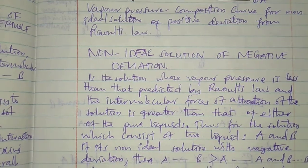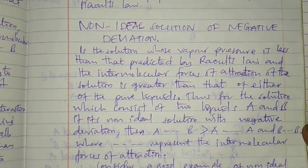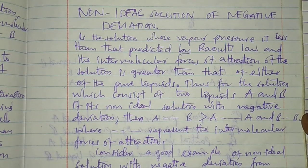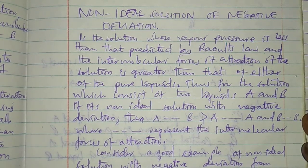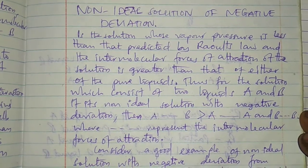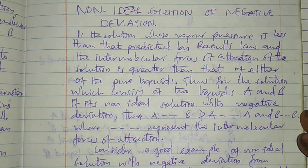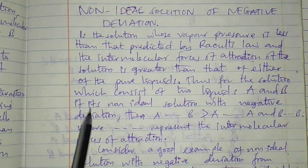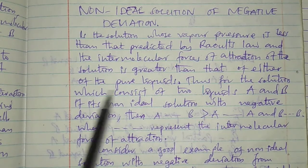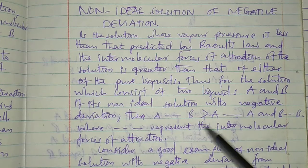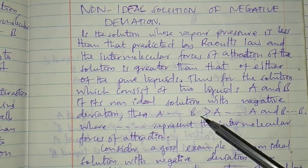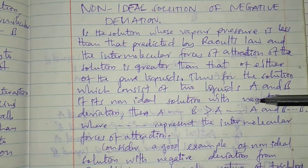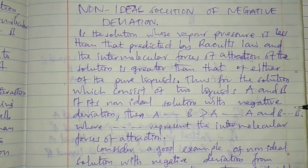In this solution, the vapor pressure is lower than that predicted by Raoult's law, and therefore the intermolecular force of attraction will be greater. For a solution which consists of two liquids A and B, if it is a non-ideal solution with negative deviation, then the A-B intermolecular force of attraction will be greater as compared with the intermolecular forces between pure liquids A and pure liquid B.